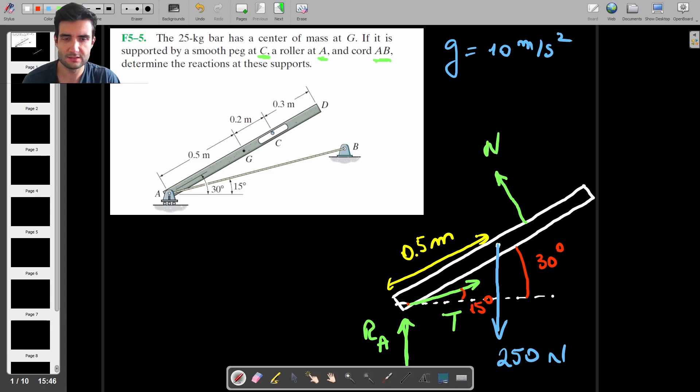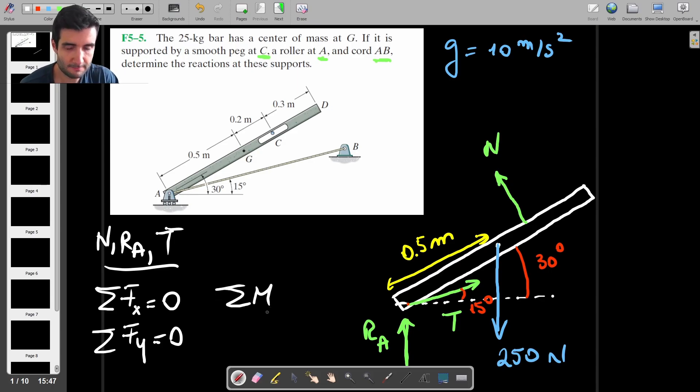The first thing to ask is can we actually solve this? So we've got three things to find: we've got N, we've got RA, and we've got tension. And the answer is yes, we should be able to do this because we've got three unknowns and we have three equations. So the equations are going to be the sum of forces in the x direction is equal to zero, sum of forces in the y direction is equal to zero, and sum of moments about any point, for example about point A, is going to be zero.